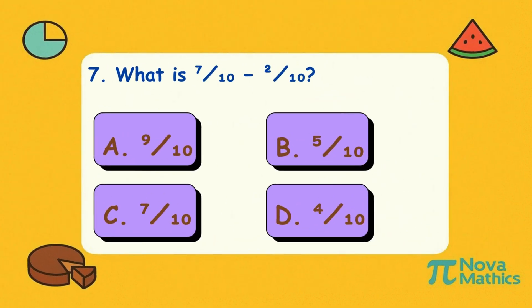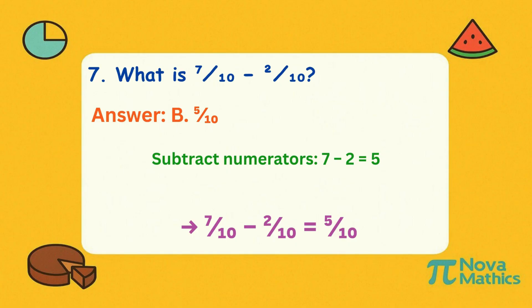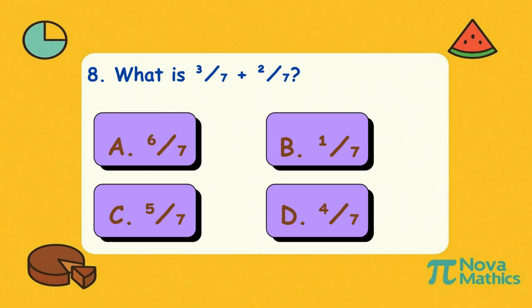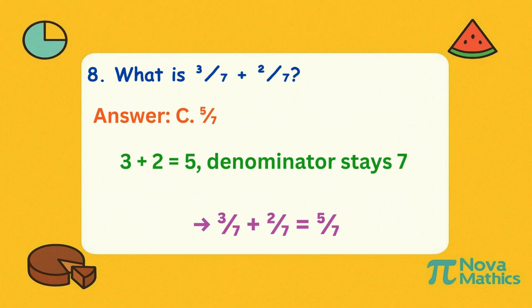Seven. What is seven-tenths minus two-tenths? Eight. What is three-sevenths plus two-sevenths? Three plus two makes five on top. The bottom number is still seven. That gives five-sevenths.